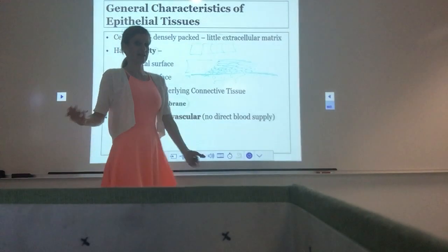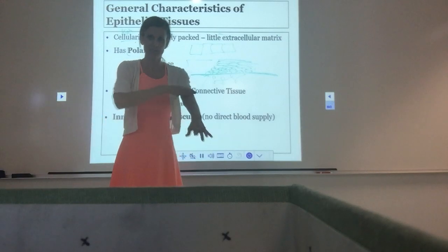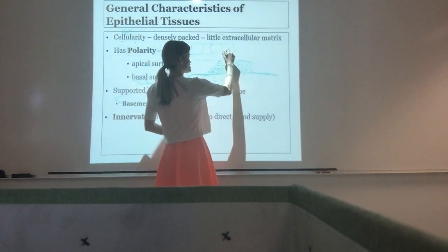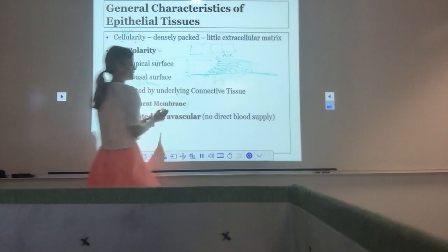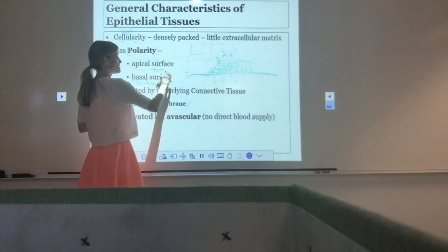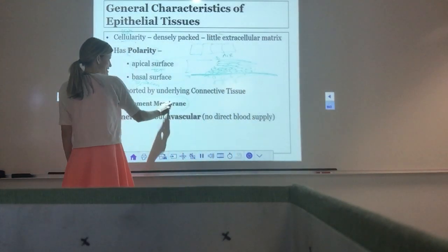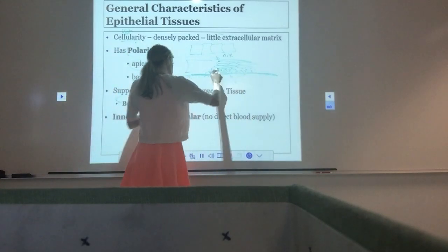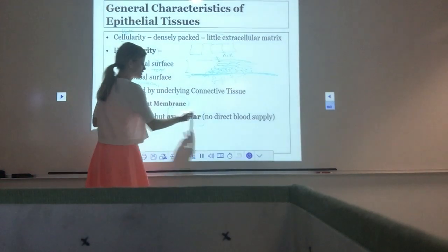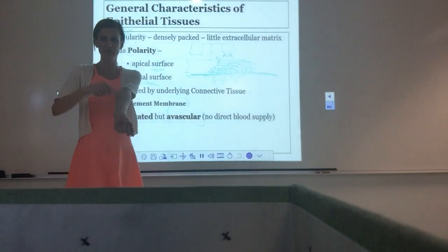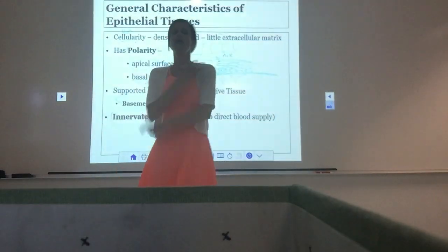The deep surface of epithelial tissue is called the basal surface. Since it lines an open space, the other side is completely different — it's open. The top surface, lining the open area, is called the apical surface. The basal surface is the bottom where the basement membrane is, with proteins and connective fibers that connect it to the connective tissue underneath. Epithelial tissue is innervated — it has nerves, so you can feel heat, pain, pinches, and texture.